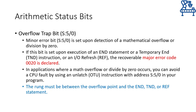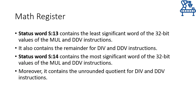Moving on, words 13 and 14 of the status file are called the math register and are used to store intermediate and full results of some mathematical instructions. Word 13 contains the least significant word of the 32-bit value of the multiply and double divide instructions, and also contains the remainder of the divide and double divide instructions. Word 14 contains the most significant word of the 32-bit result of the multiply and double divide instructions, and may also contain the unrounded quotient of the divide and double divide instructions.